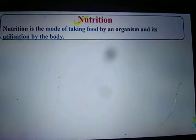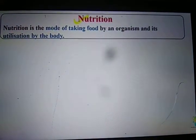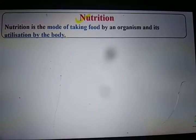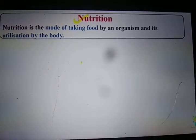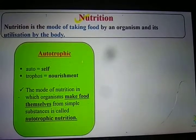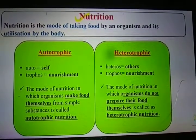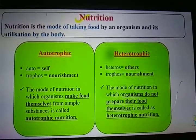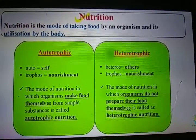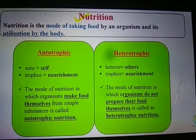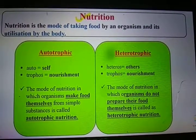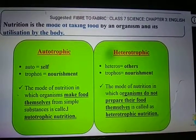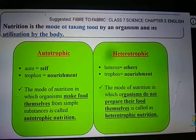We will now study about nutrition. Nutrition is the mode of taking food by an organism and its utilization by the body. Broadly there are two modes of nutrition: autotrophic and heterotrophic. The word 'auto' means self and 'trophos' means nourishment, meaning self-nourishment. The mode of nutrition in which organisms make food themselves from simple substances is called autotrophic nutrition.